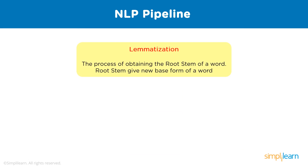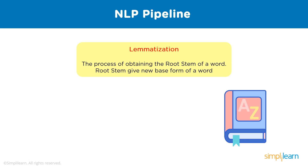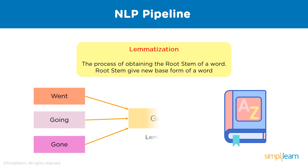The next process is lemmatization — the process of figuring out the root form, or lemma, of each word in the sentence. Lemmatization is similar to stemming in that we remove word affixes to get the base form, but the difference is that the root word is always a real dictionary word, whereas the root stem may not be. Lemmatization uses a knowledge base called WordNet. For example, 'went,' 'going,' and 'gone' all originate from 'go,' which is the lemma.